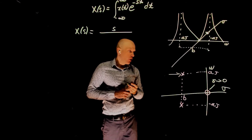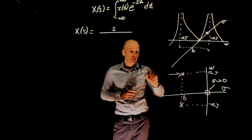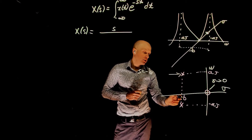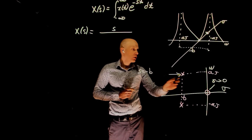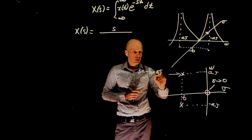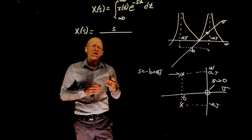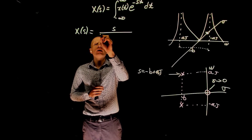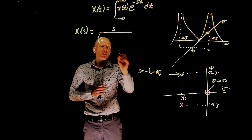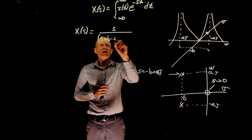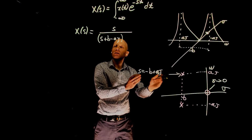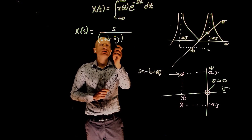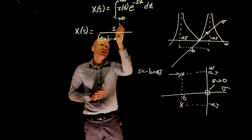Looking at the pole at s equals negative b plus aj: when s approaches negative b plus aj, we need the function to go to infinity. We achieve this by dividing by s plus b minus aj — so when s approaches that point, the denominator tends to zero and x of s goes to infinity.